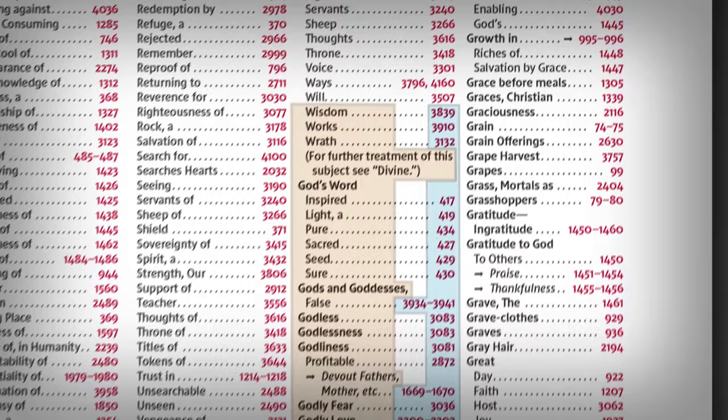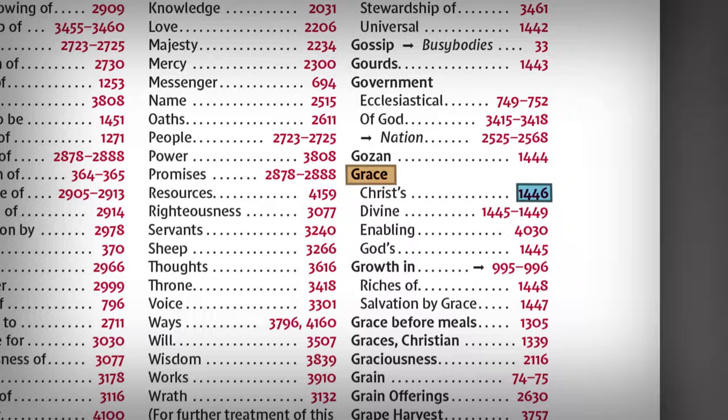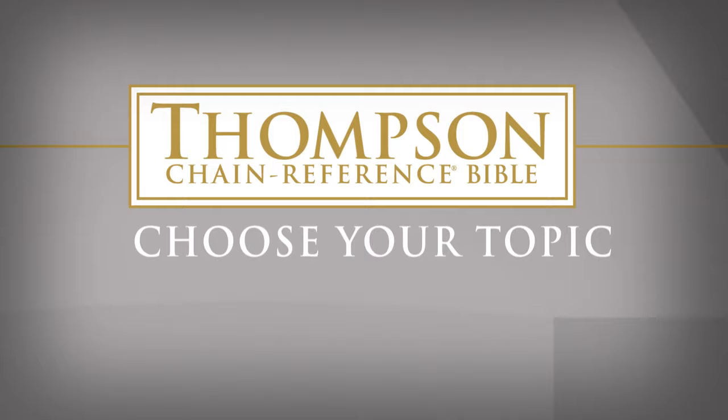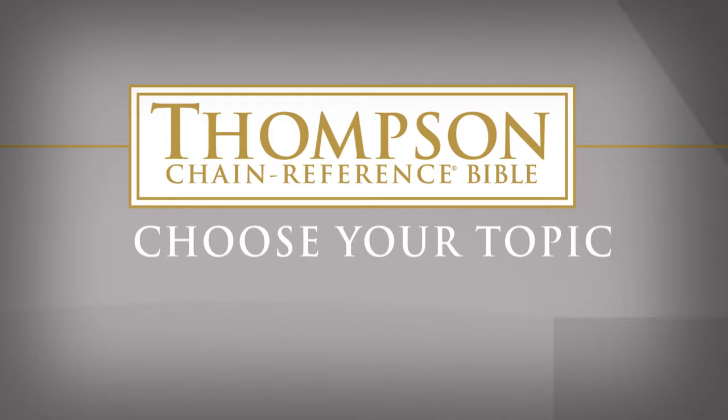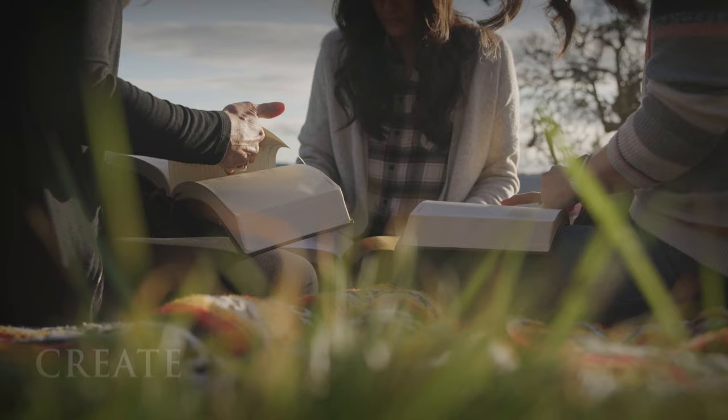Say that you wanted to do a study on the topic of grace. Once you find the topic number for grace, you can look that up in the numerical index and find all the related verses, choosing whichever verse you'd like to start your chain from. Using the Thompson Chain Reference System, you can choose your topic and easily find all the related verses, making this a great tool for planning out sermons or topical studies. Or you can start with any verse and use the topic numbers to create your own comprehensive Bible study.